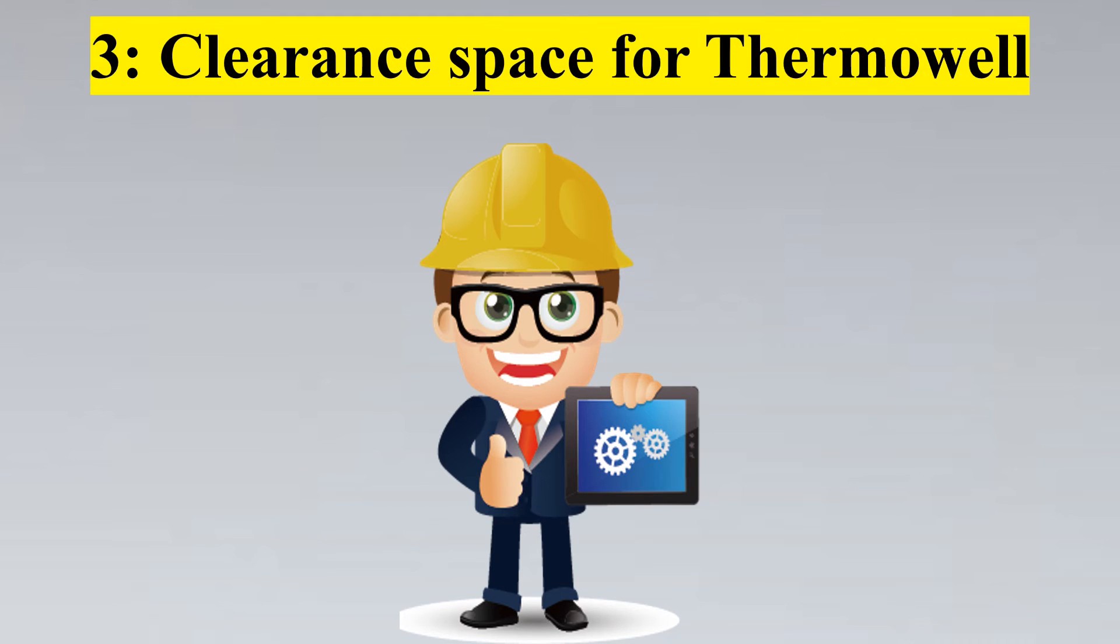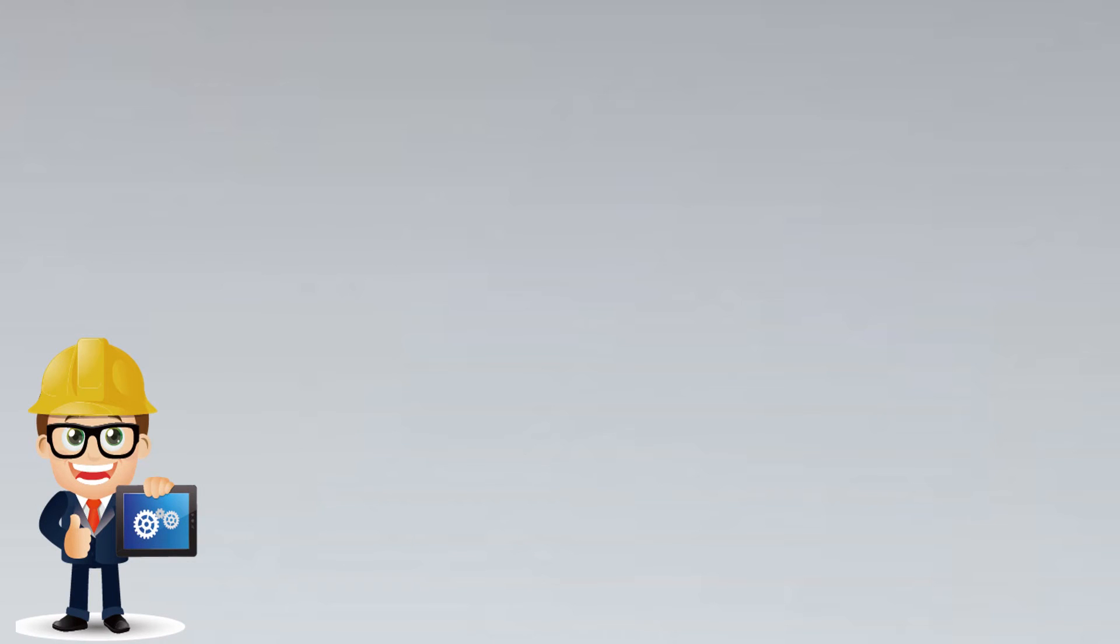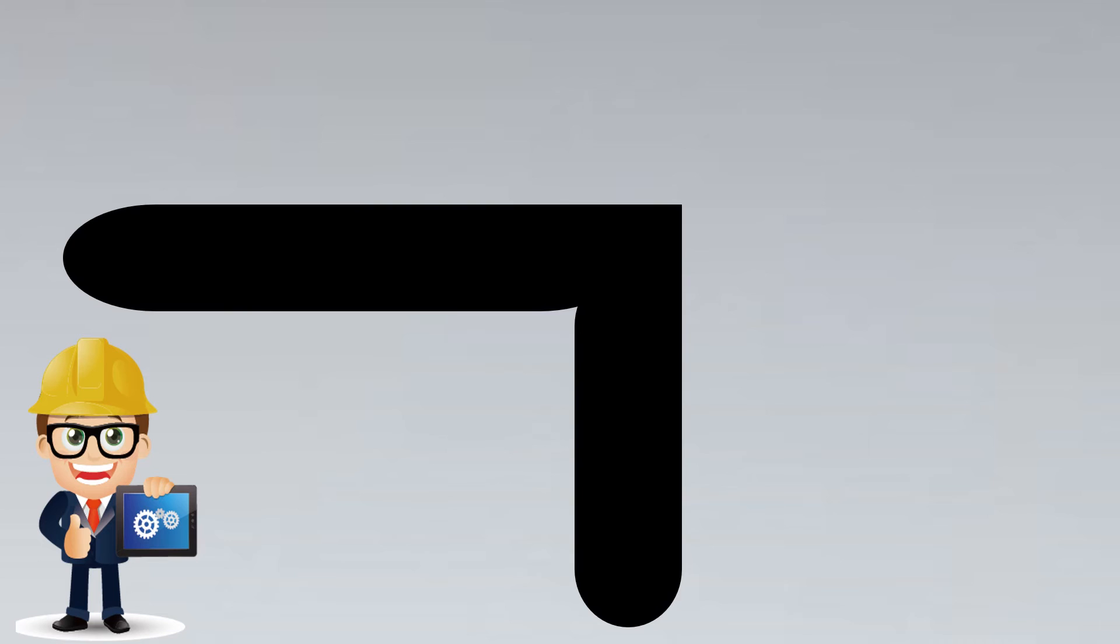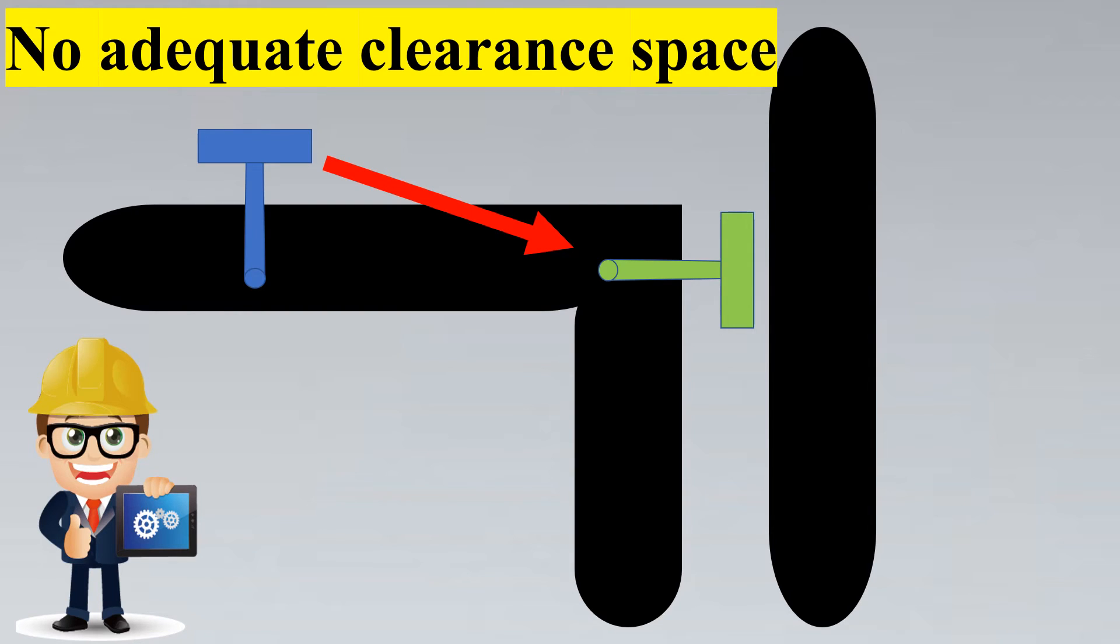Now let's look into the next criteria which is the clearance space for thermowells. What does this criteria state? This criteria is an easy criteria but often gets forgotten. And this is that imagine that this is your elbow and you have to install your thermowell from here to here which is the elbow as we stated. It seems to be simple right? But what if there is a pipe nearby to it? How would you remove the thermowell from the process? This seems to be a confusing issue. And if you notice that in such cases there is no clearance space provided and for the operations team it will be extremely difficult and thus this is not a good engineering practice.